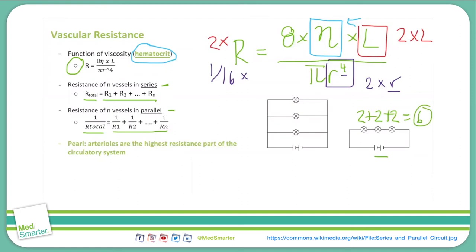So what if we have three vessels in parallel like we see here, and each has a resistance of two? What's the total going to be? It's going to be one over two plus one over two plus one over two equals one over the total. That means one over the total equals three over two, and the total equals two thirds.